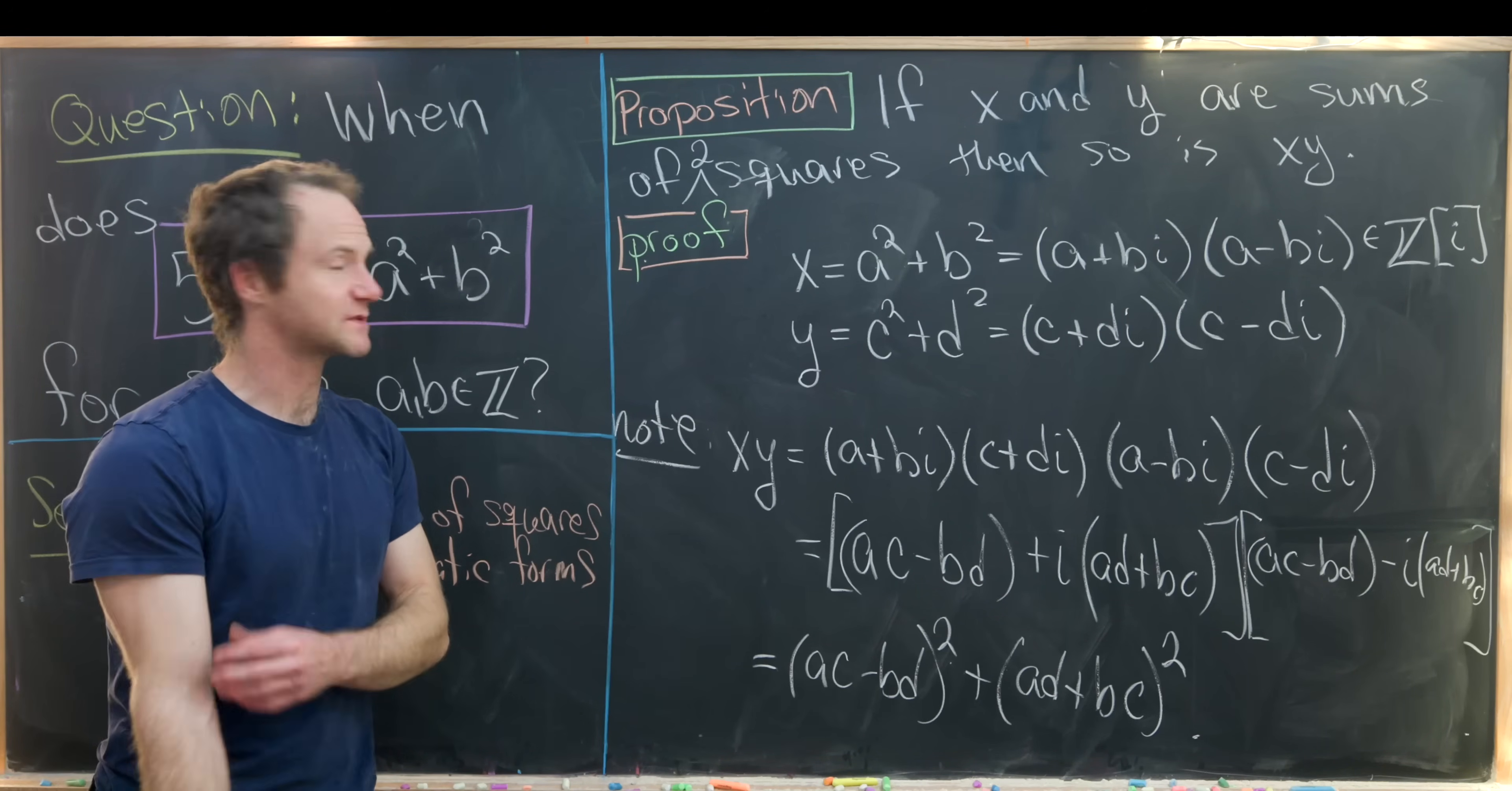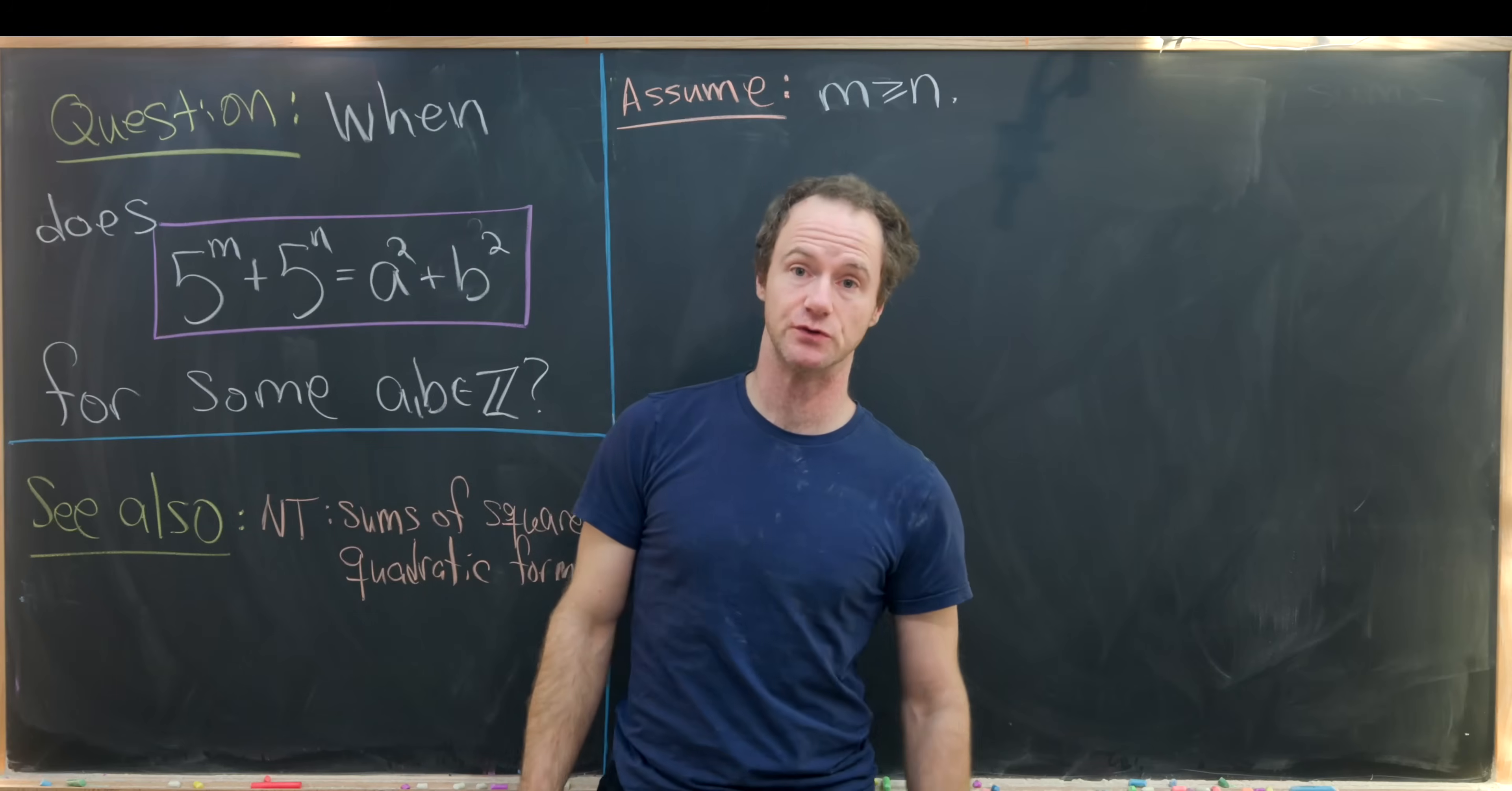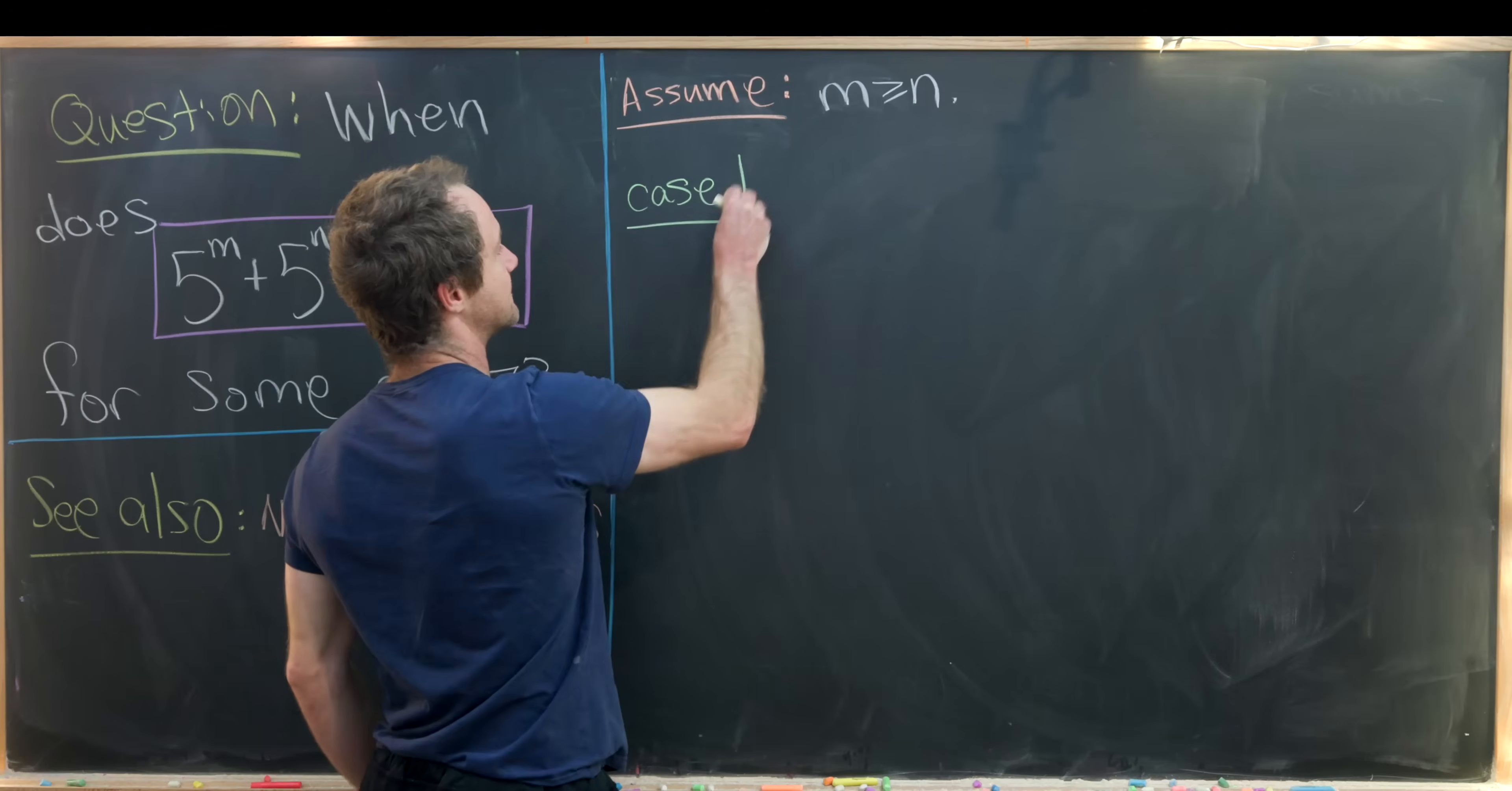Okay, so now that we've got this proposition proven we're ready to jump into our goal question. We just proved a really important proposition that will help us identify which values of m and n make 5 to the m plus 5 to the n the sum of two squares. So we're going to assume that m is greater than or equal to n, but you get a symmetric result if you assume the other one. And actually our first case will be the case when we have equality.